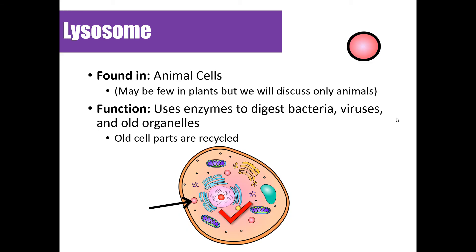Lysosomes are found in animal cells. They contain enzymes — proteins that speed up chemical reactions — and can break down dead material like food, bacteria, or old worn-out cell parts. Lysosomes also perform programmed cell death, called apoptosis, which we'll discuss in a future lesson. We'll say lysosomes are found in animal cells only, though some scientists believe they're present in plant cells as well.